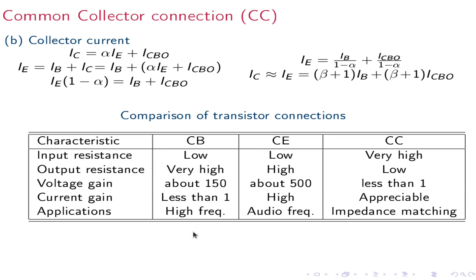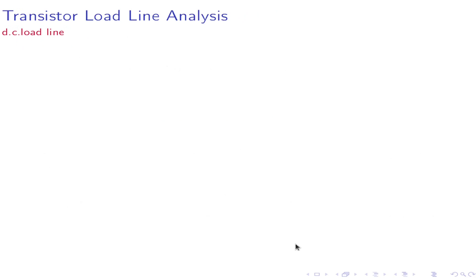Comparing the three configurations: common base is normally used for high-frequency applications, common emitter is used for audio-frequency applications, and common collector is used for impedance matching. Now, transistor load line analysis.